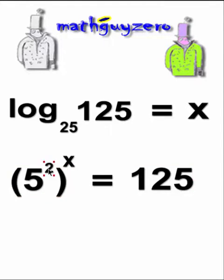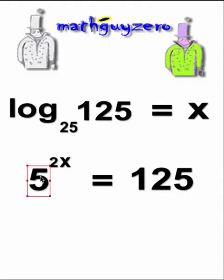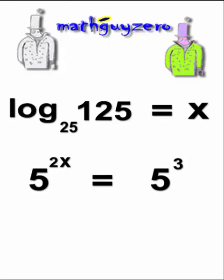Now we have one exponent being raised by another exponent, so we're going to multiply them. So it becomes 5 raised to the 2x. We need to put this into a base number of 5 raised to some exponent. And you're right, that is 5 cubed.